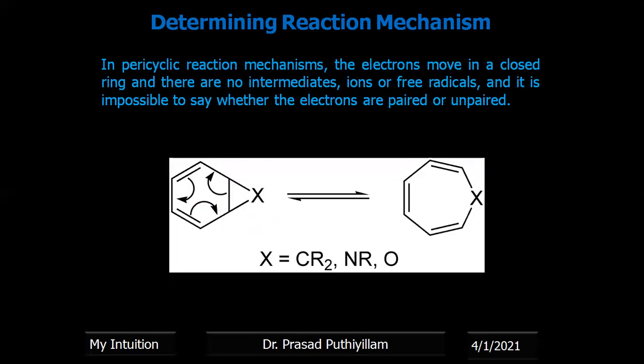In pericyclic reaction mechanism, the electron movement is within a closed ring and no further intermediates are formed. These are rearranged mechanisms and the final product is obtained by the movement of electrons in a closed ring. One example is given here.